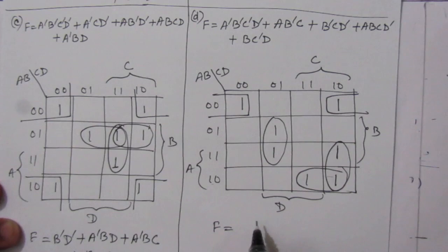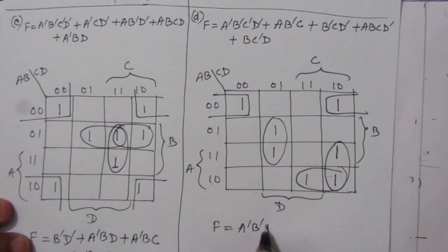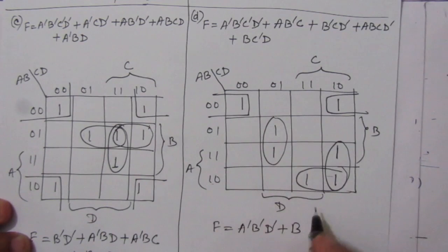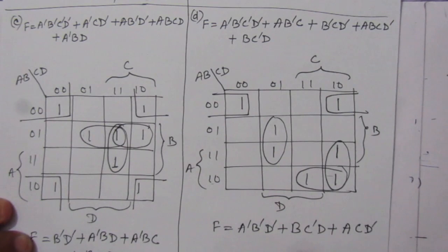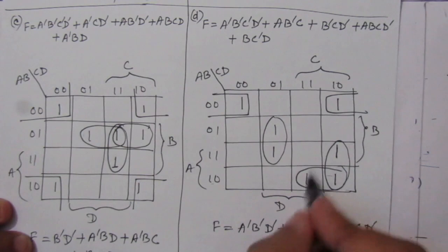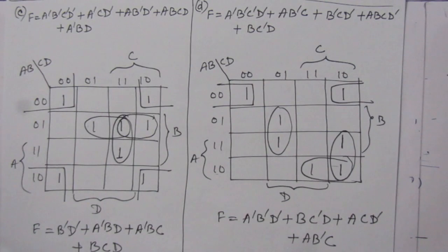So the simplified expression for part D is: F = ĀB̄D̄ + BC̄D + ACD̄ + AB̄C. Thank you for watching. If you have any questions, please put them in the comment section below. Also, like, share, and subscribe to my channel. Thank you.